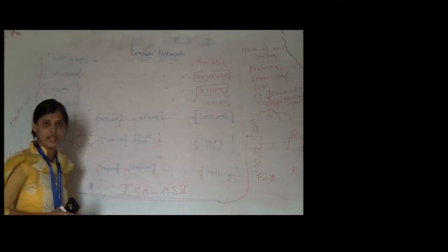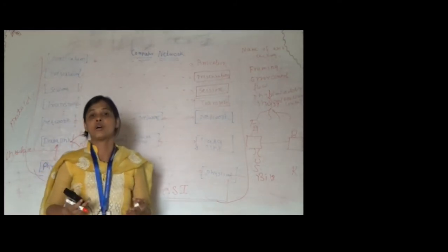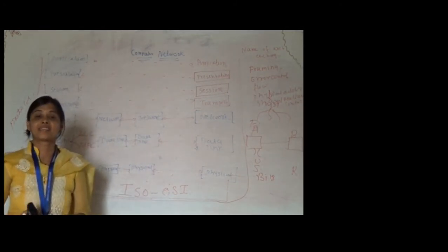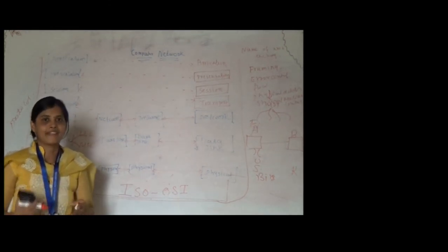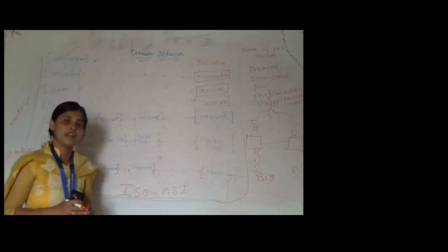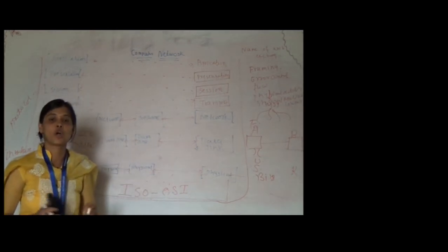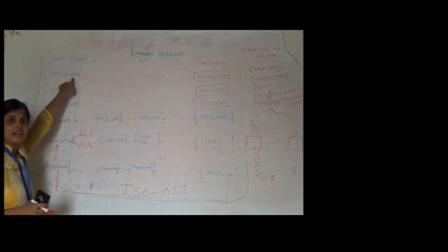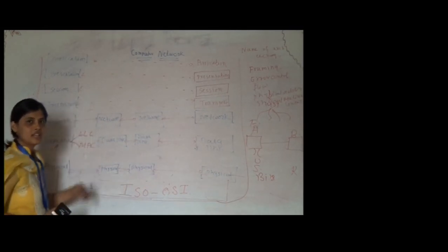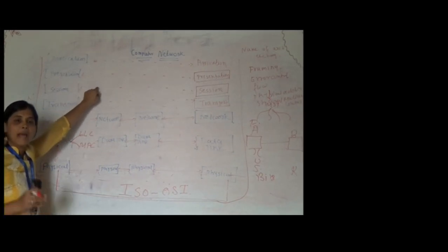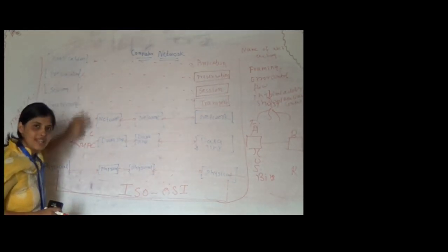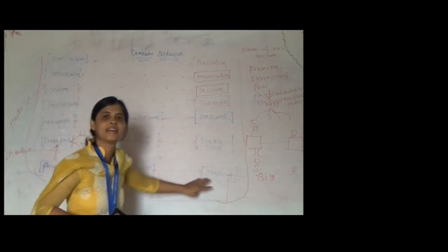The next layer is the presentation layer. As its name suggests, it is responsible for defining the syntax and semantics of the language of communication used by the machine. At the same time, the presentation layer performs encryption and decryption tasks as well as compression tasks. Above the presentation layer, the application layer comes. Basically, users access network services through the application layer — it is the layer that interacts with the user. So these are all the layers of the OSI reference model.